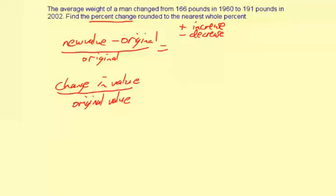So you could think about this formula either way. Now the change in value is going to be 191 minus 166 because 191 is the new value, 166 is the original value. So let's subtract here. Looks like 25 pounds. The change in value is 25 pounds and is positive so we know we're increasing.